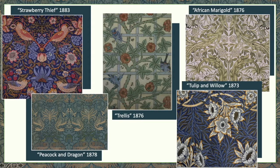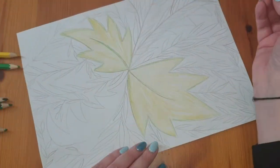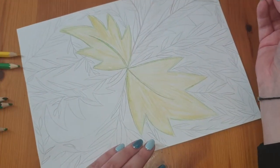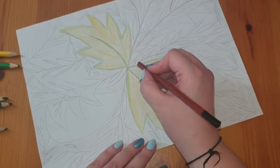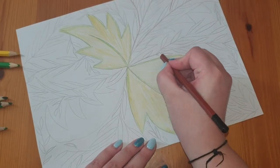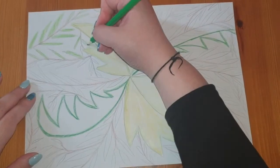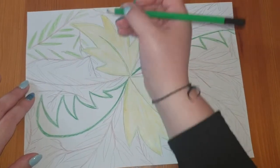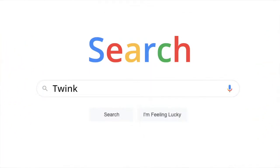Holly will lead children in a step-by-step guide on how to create their own floral designs inspired by William Morris. In one piece, she uses greens and yellows around the stems.